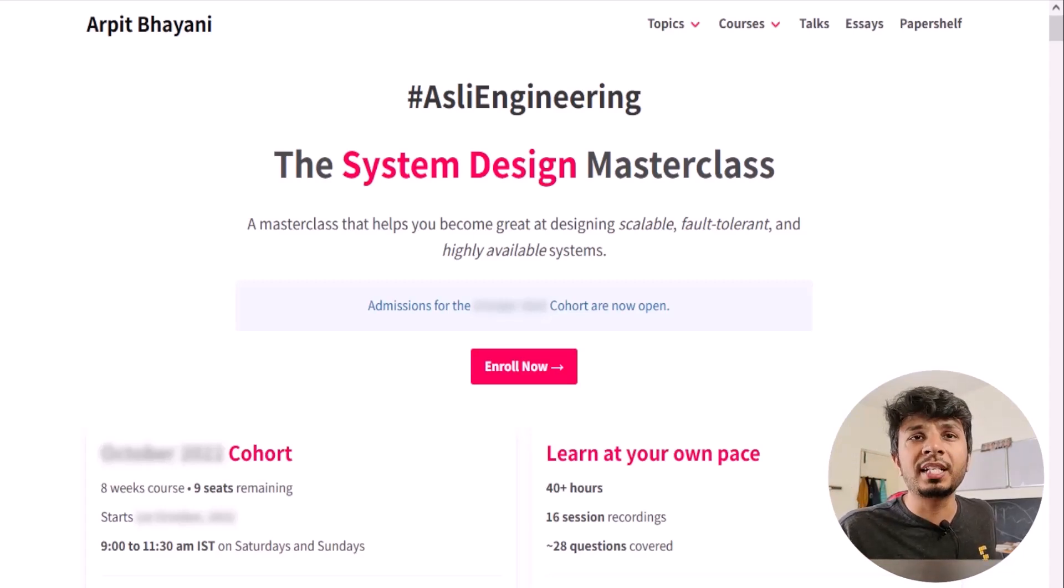We cover topics ranging from real-time text communication for Slack to designing our own toy load balancer to quick buses live text commentary to doing impressions counting at scale. In all, we would be covering roughly 28 systems, and the detailed curriculum split week by week can be found in the course page linked in the description down below.